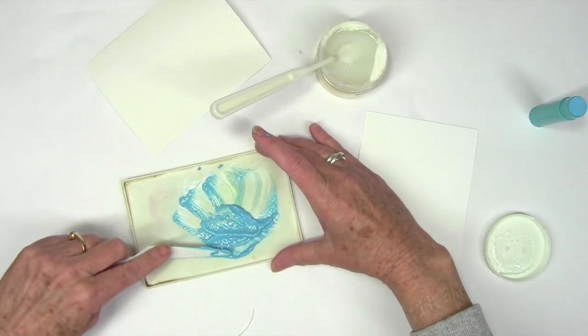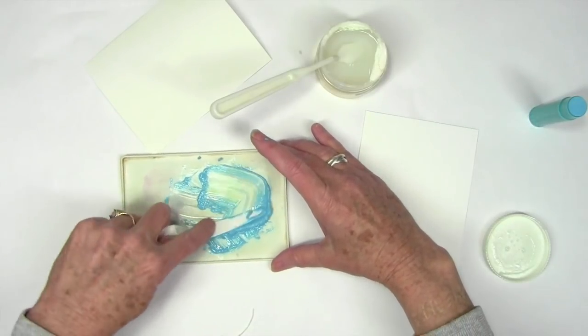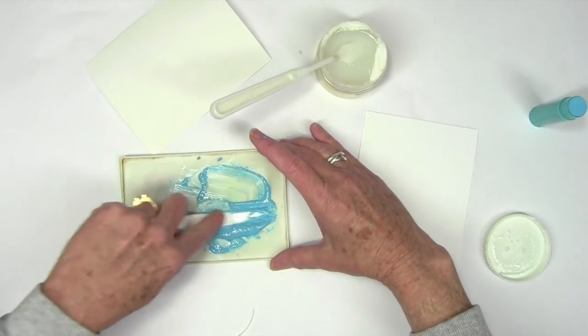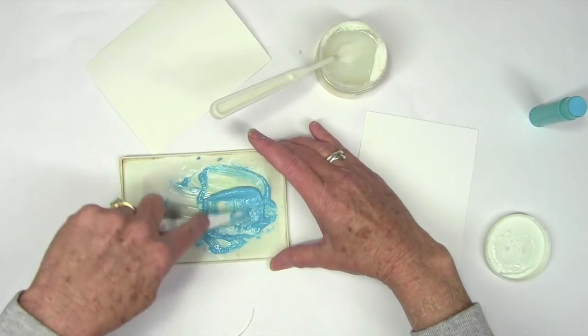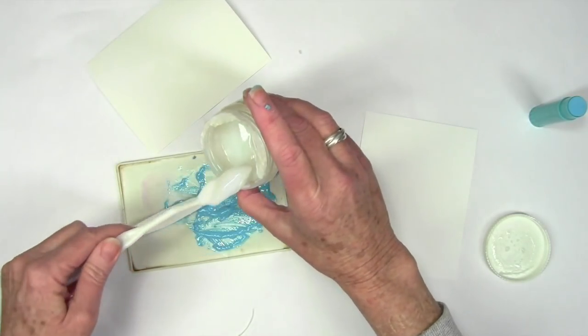You can make this really concentrated color or really light color if you want. I'm going to get this really mixed up well, pressing down on the leftover Gelatos to make sure it's really well mixed in. I'm going to add a little bit more glaze. I want this a little bit lighter.